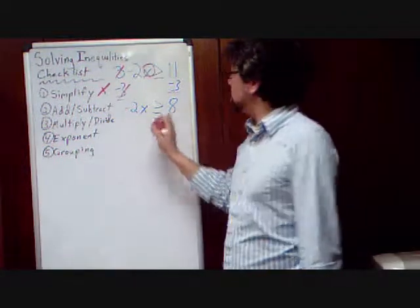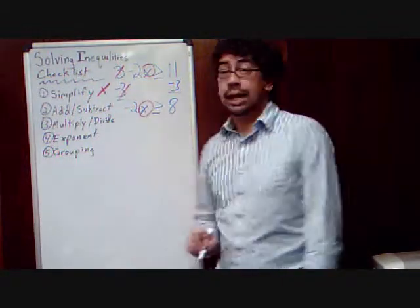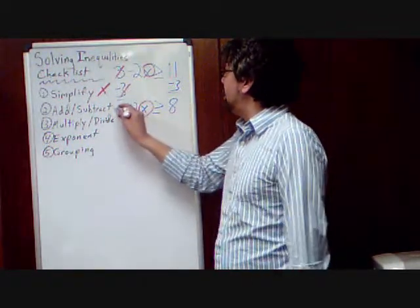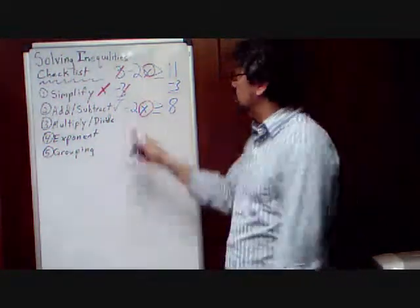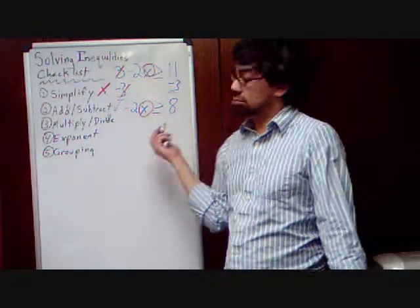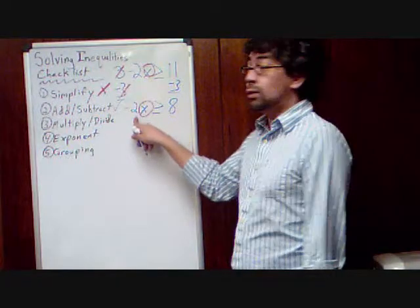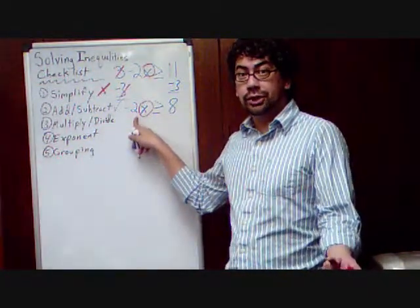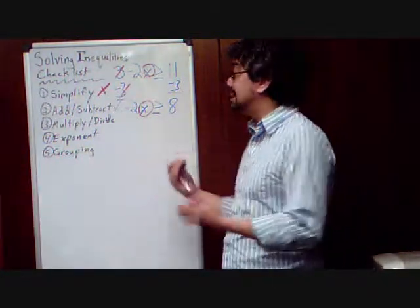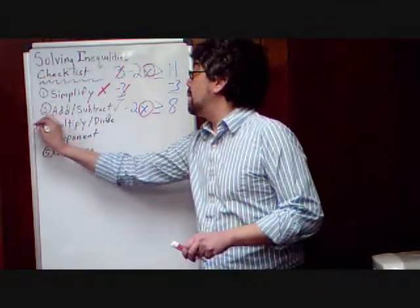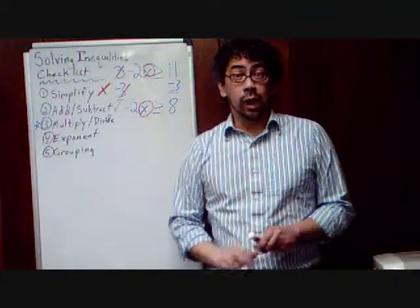Now, again, let's focus on isolating that x. So, let's keep on circling it. So, we did our step of add, subtracting. Do we have any more add, subtracting? No, we don't. So, let's move on to multiply and divide. We can see we're multiplying by this negative 2. So, the opposite of that is divide. But, here is the only difference that we have to keep in mind with inequalities.